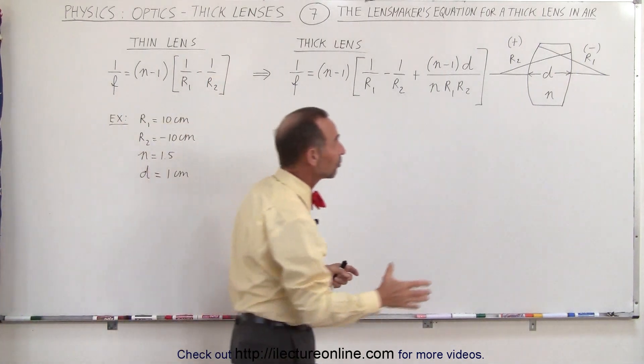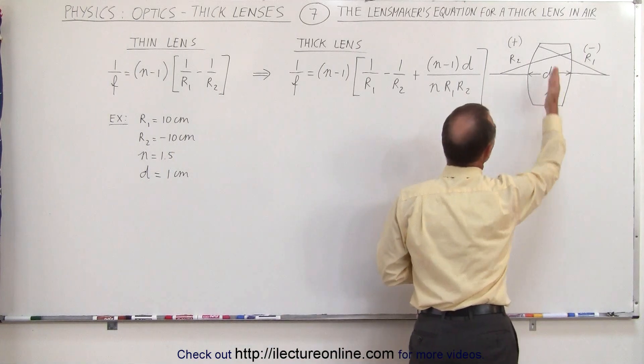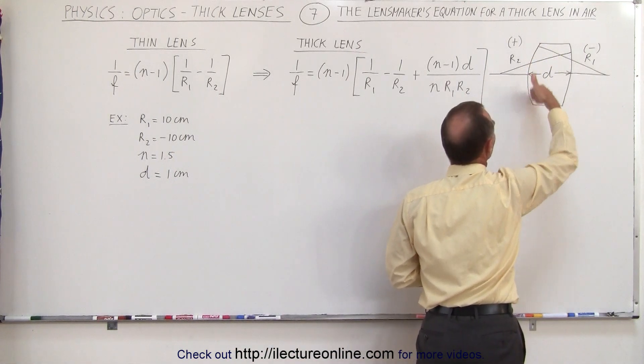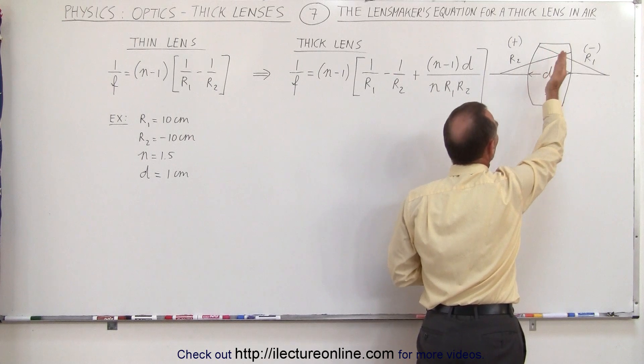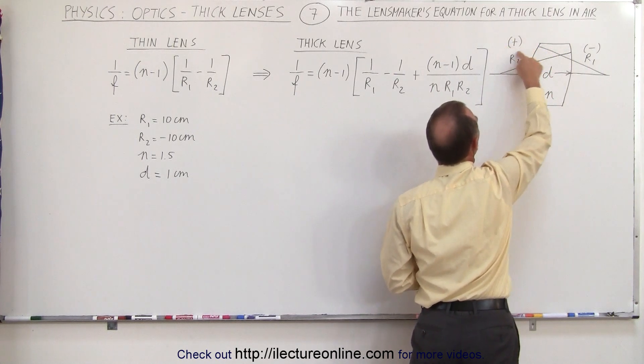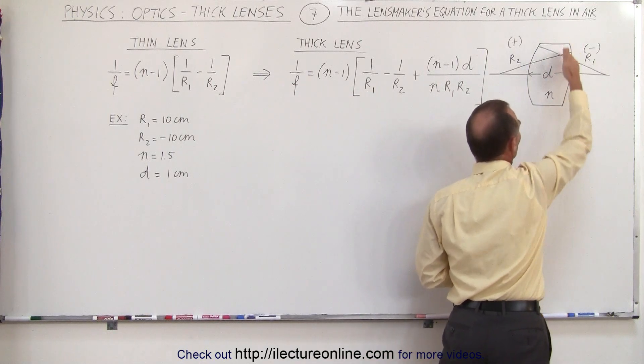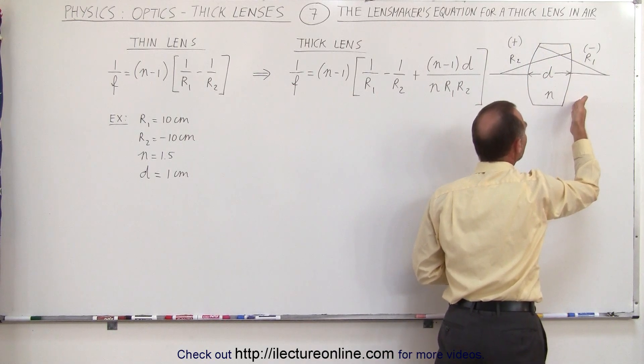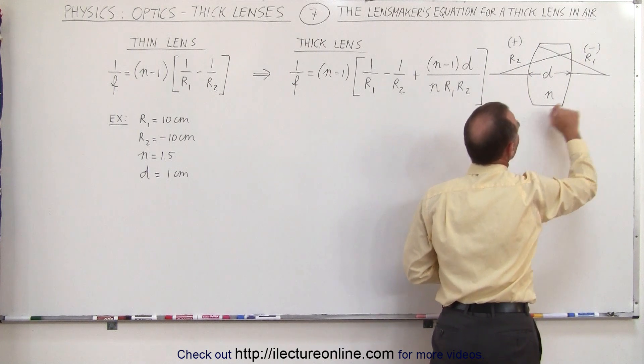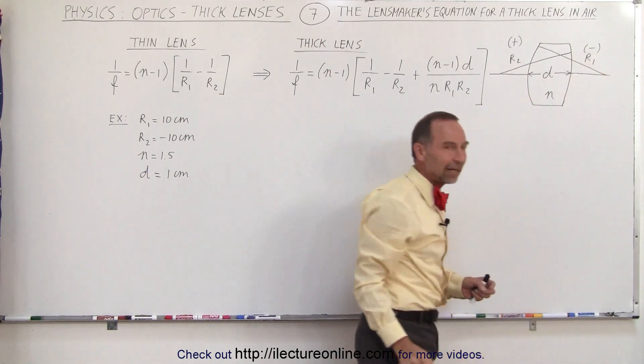Now for reference here I'm drawing a lens, and notice that if the front end of the lens or the front side of the lens bulges towards the left we call that a positive radius, and if the surface of the lens bulges away from the left side then we call it a negative radius.